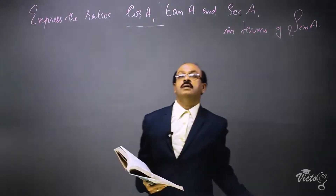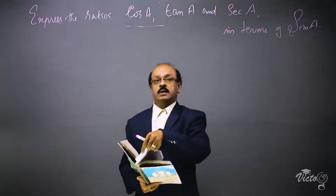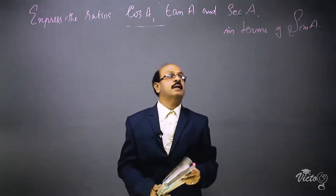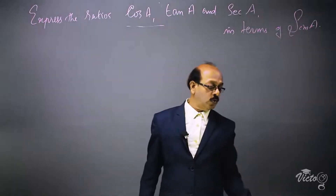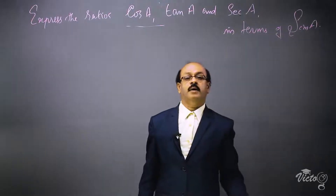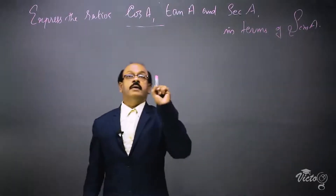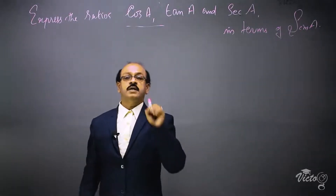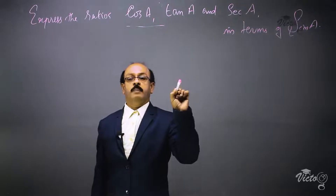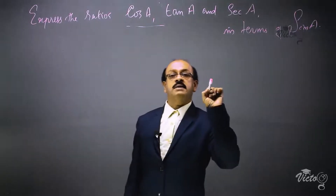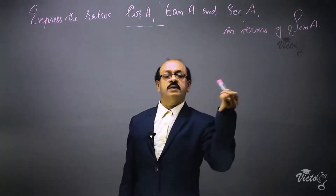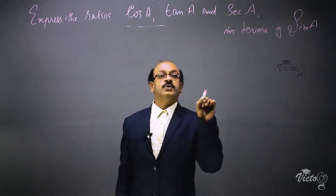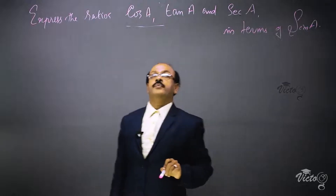We have to change cos A, tan A, and sec A in terms of the ratio sin A. That means in each problem, the right side will contain only sin A or sin squared A — no other ratio should appear on the right side.